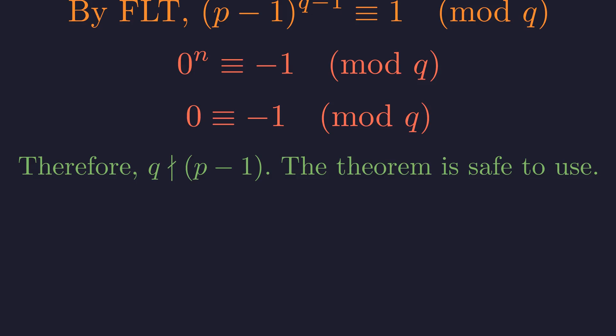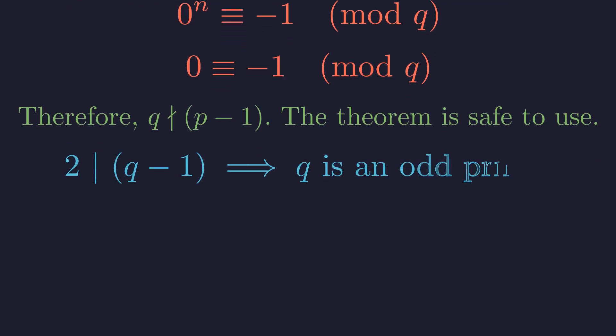We now know that the multiplicative order of p-1 modulo q must divide both 2n and q-1. Since (p-1)^n is -1, the order cannot divide n. This implies the order must be an even number, which in turn means q-1 must be even. If 2 divides q-1, then q must be an odd prime. Consider the implication: we have shown that the smallest prime factor of n must be odd.